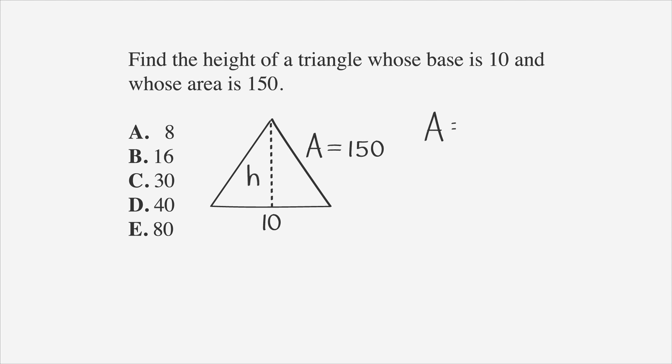Since the area of a triangle is one-half base times height, we know that 150 equals one-half times 10 times the height. Simplify to get 150 equals 5H. Then divide each side by 5 to find that the height equals 30. So answer choice C is correct.